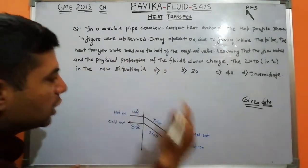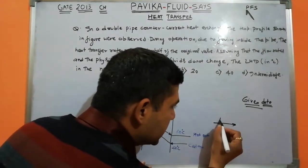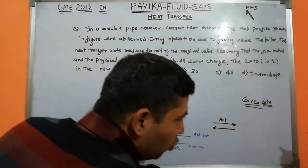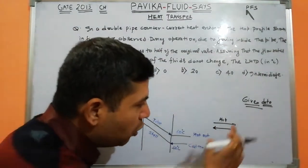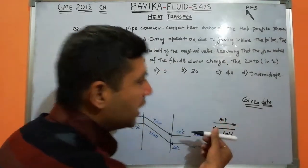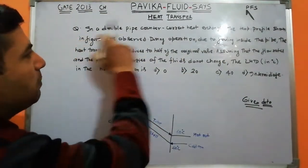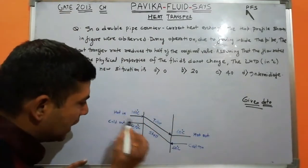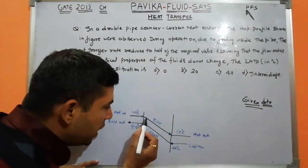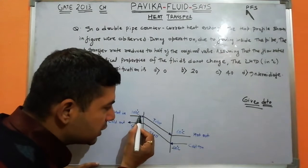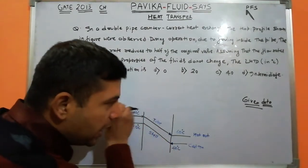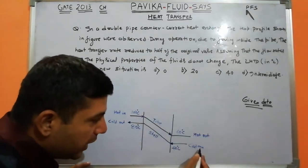In a counter-current heat exchanger, the hot fluid and cold fluid flow in opposite directions. Here, hot fluid enters at 100°C and exits at 60°C. Cold fluid flows in the opposite direction — this is the counter-current arrangement. The temperature profile is given: hot fluid enters at 100°C and exits at 60°C; cold fluid flows in the opposite direction.